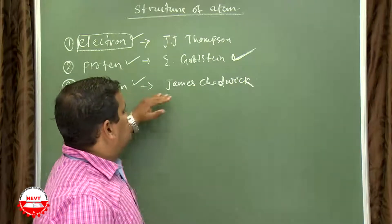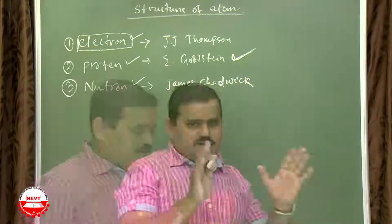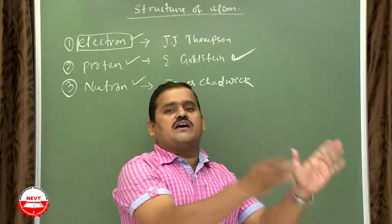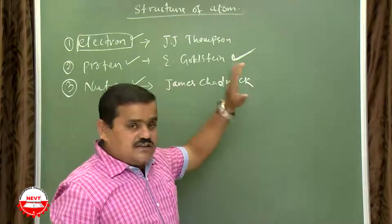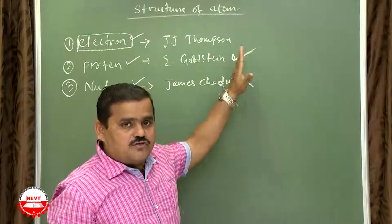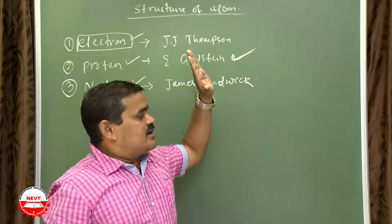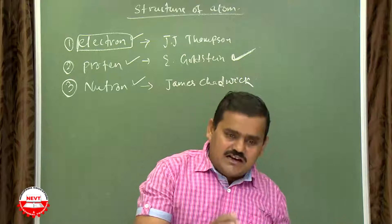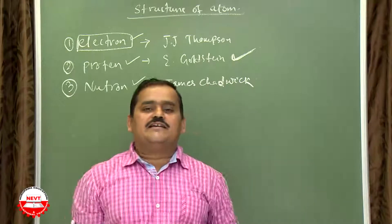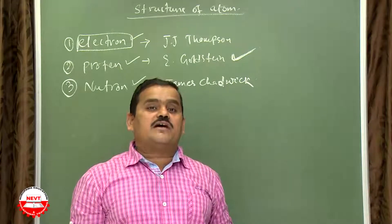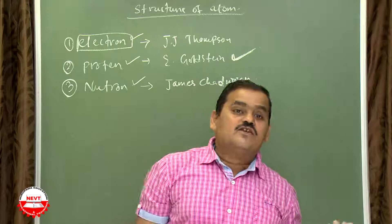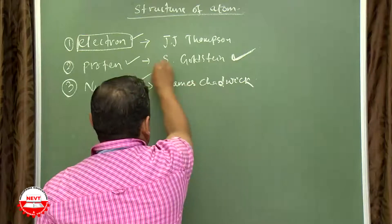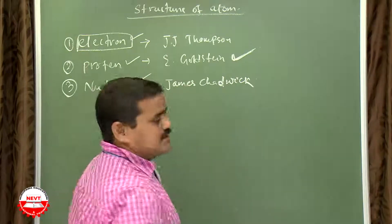The third fundamental particle is the neutron, discovered by James Chadwick. At that point, it was known that the atom consists of electrons and protons. But it was found that the mass was a little bit higher than expected — this is due to the presence of another subatomic particle, the neutron, discovered by James Chadwick.